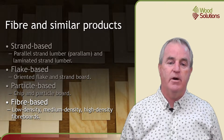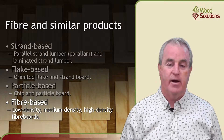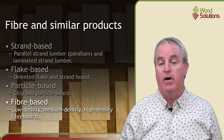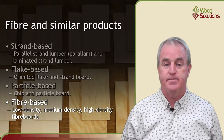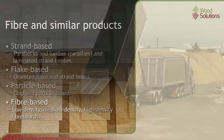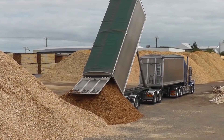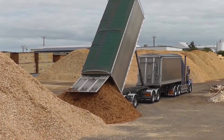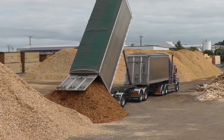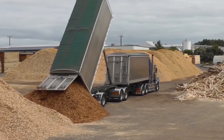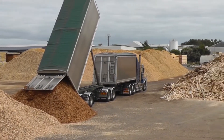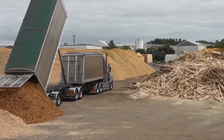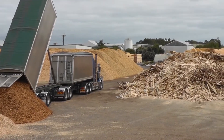Two of these product types are made in Australia: particle board and fibre board. This video shows the stages in the production process for particle board. Production of other types of panels and billets will be broadly similar, though each will have unique characteristics.